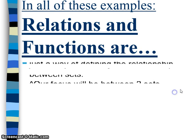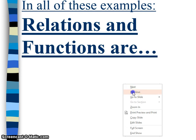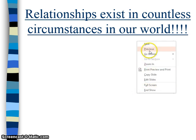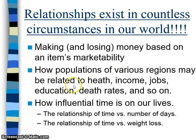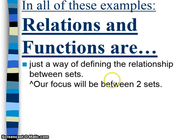In all of these examples, relations and functions are just a way of defining the relationship between sets. A relationship can be between more than two sets — for example, population depends on many aspects of life, so a lot of relationships in our world are made of many different interconnected sets. But our focus in this class will only be between two sets.